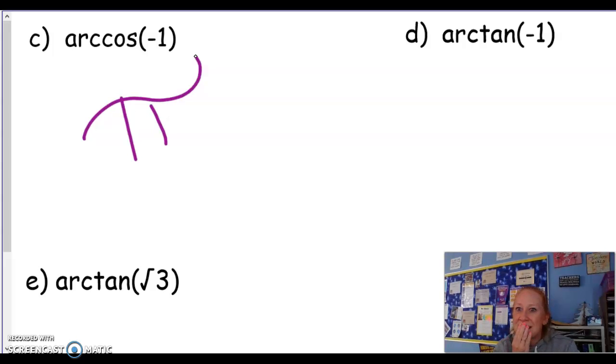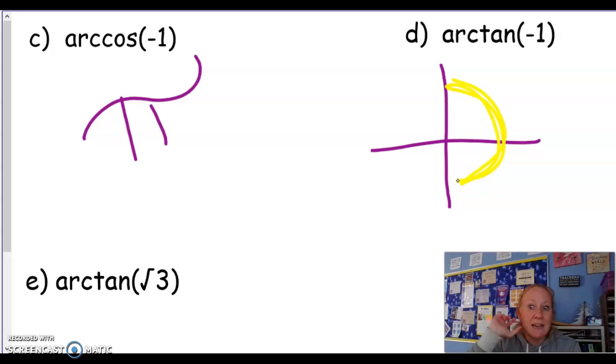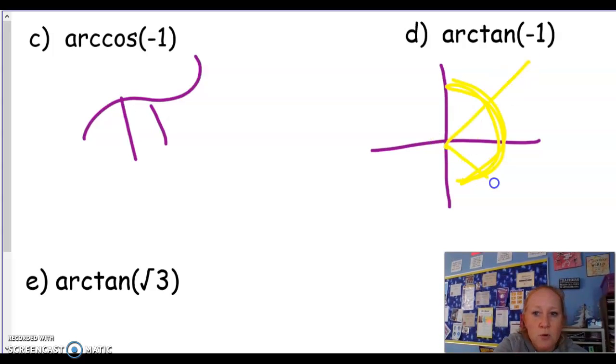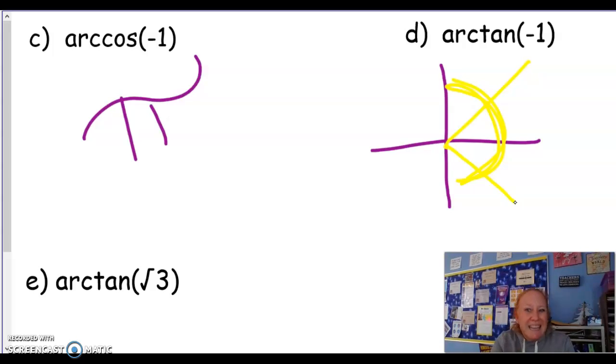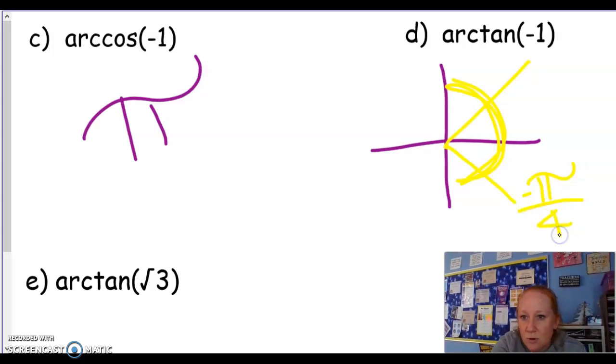Tangent. Where are the tangents 1? I'm working over here. Tangent is the y over the x. So where are they the same that they would give you 1? It's either here at π/4 or here at π/4. But it's negative, so you want this one. Remember, the context says we're only going in those two quadrants. So we're going to go -π/4 as opposed to calling it 7π/4.